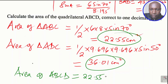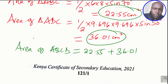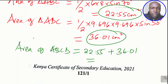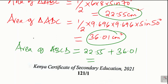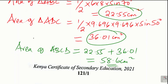Adding the two areas: 22.55 plus 36.01, correct to one decimal place, gives a total area of 58.6 centimeters squared. That is how to solve the area of the quadrilateral.